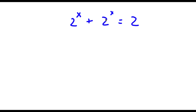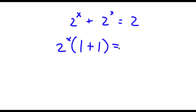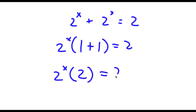So I have 2 to the power of x plus 2 to the power of x is equal to 2. The first thing I'm going to do is on my left-hand side, I'm going to factor out 2 to the power of x. So now I have 2 to the power of x times — well, 2 to the power of x divided by 2 to the power of x is 1 — so I have 2 to the power of x times 1 plus 1 is equal to 2.